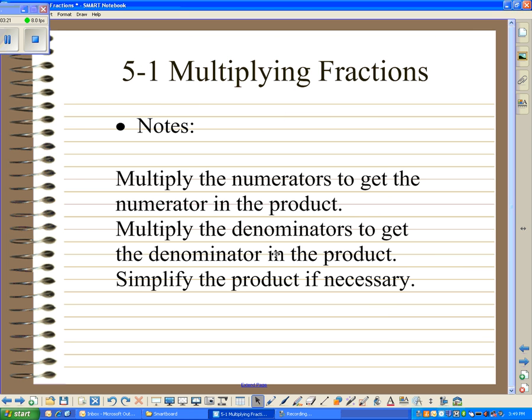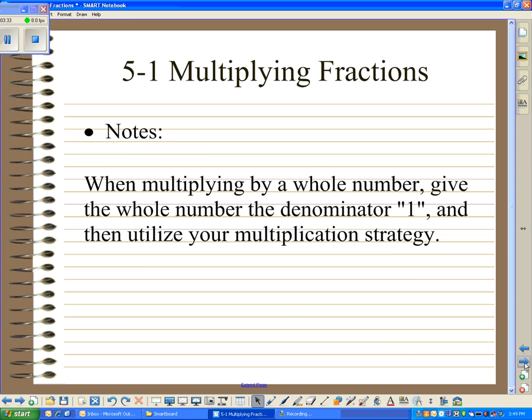In order to multiply fractions, we're going to multiply the numerators to get the numerator in the product, multiply denominators to get the denominator in the product, and then simplify the product if necessary. One other thing we need to keep in mind is when we're multiplying by a whole number, we're going to give the whole number the denominator one and then utilize the multiplication strategy we just discussed.